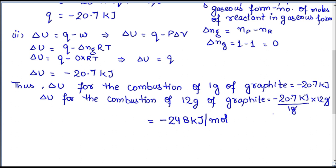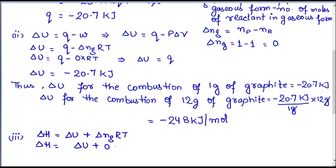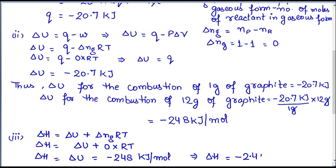Now we find the enthalpy change: ΔH = ΔU + Δng·RT. Since Δng = 0, it becomes ΔH = ΔU + 0 = ΔU = -248 kJ/mol for 1 mole of graphite. This can be written in simplified form as ΔH = -2.48 × 10² kJ/mol. That is the final answer.